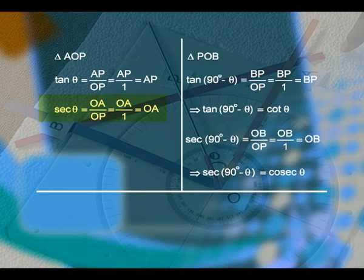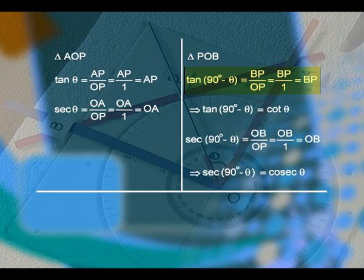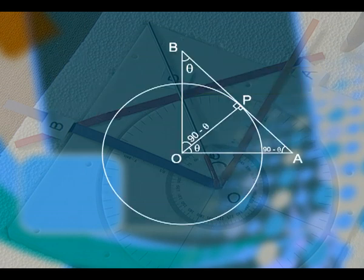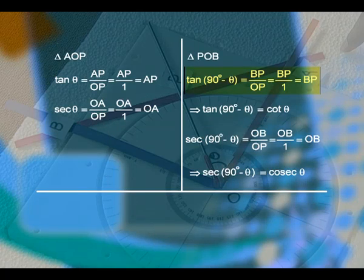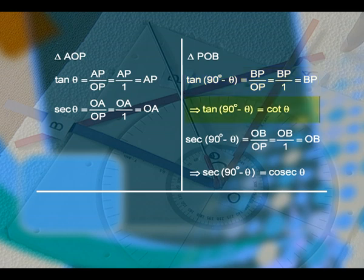Now, children, we will see the complementary angles of tan theta, secant theta, cot theta, and cosecant theta. In triangle P, O, B, tan(90 minus theta) equals opposite side by adjacent side, that is BP by OP, equal to BP by 1, equal to BP. We know that BP is cot theta, therefore tan(90 minus theta) is equal to cot theta.